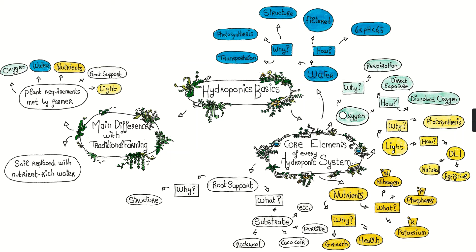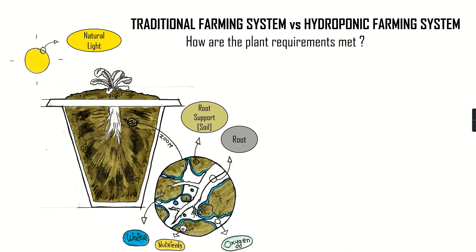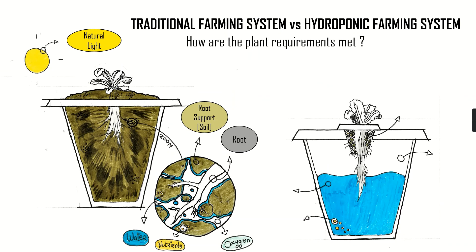Now let's go back and add that to our diagram. Here is our hydroponic system. This one is based on the Kratky method, which is, according to Wikipedia, a passive hydroponic technique for growing plants suspended above a reservoir of nutrient-rich water. It's one of the simplest methods. First, the root support — here we have some clay pebbles, and the roots will use that as a medium to grow around and support the stem of the plant.